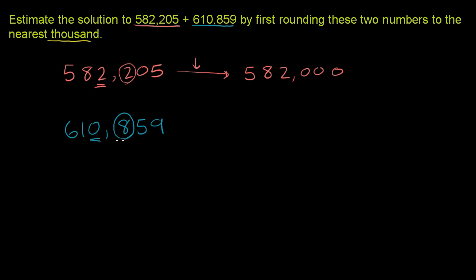It is 5 or greater. 8 is greater than 5. Or it could even be 5, and we'd still round up. So we're going to round up in this situation. So we end up with 600. And instead of 610,000, we're rounding up to 611,000.